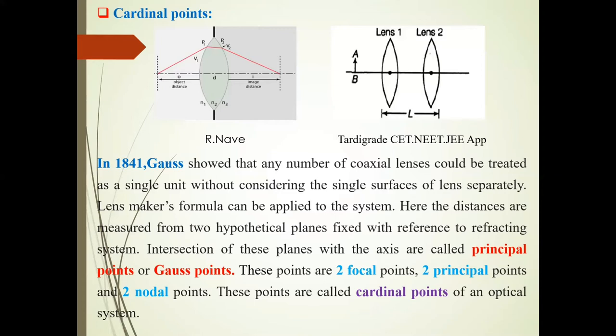Without considering the single surfaces of lens separately, lens maker formula can be applied to the system. Distances are measured from two hypothetical planes fixed with reference to the refracting system. Intersection of these hypothetical planes with the axis are called principal points or Gauss points.